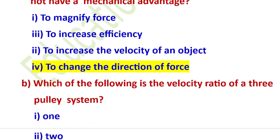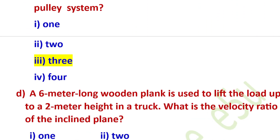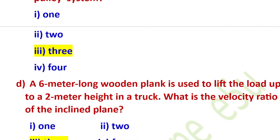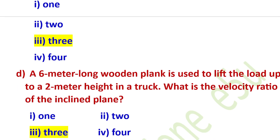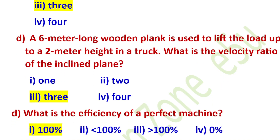Which of the following is a velocity ratio of a 3-pulley system? The answer is D. A 6-meter long wooden plank is used to lift a 2-meter height truck — what is the velocity ratio of the inclined plane? The answer is D.